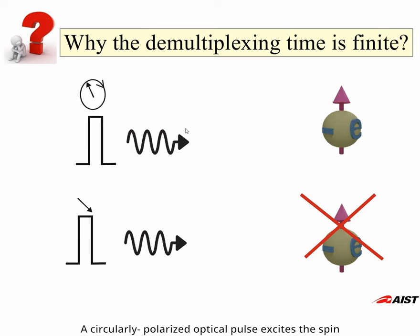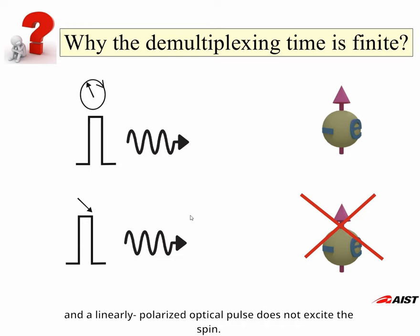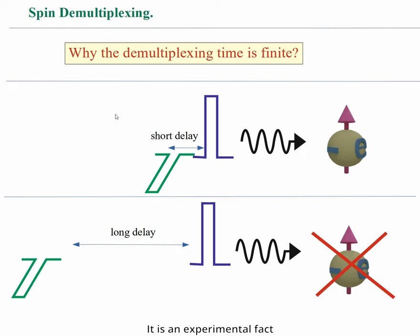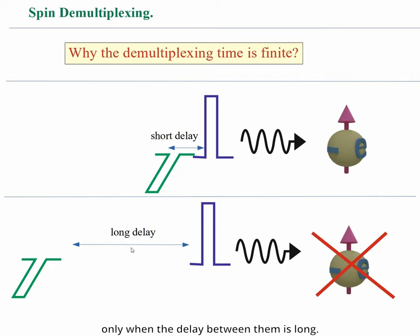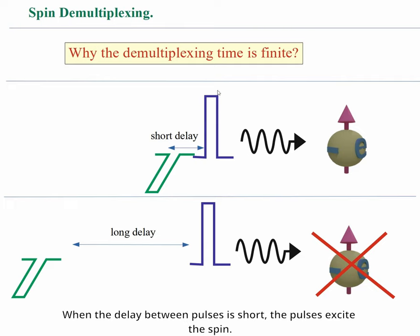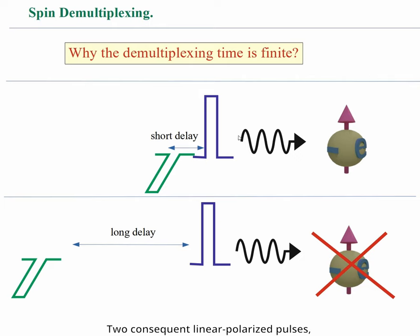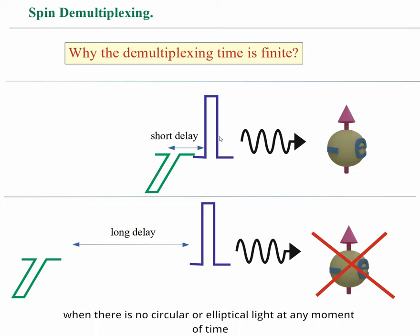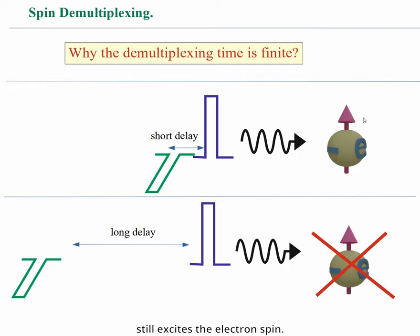A circularly polarized optical pulse excites the spin; a linearly polarized optical pulse does not excite the spin. The output is just yes or no — there is nothing between. However, it is not entirely true. It is an experimental fact that two linearly polarized pulses do not excite spin only when the delay between them is long. When the delay between pulses is short, the pulses do excite the spin. Two consequent linearly polarized pulses, which are not overlapping at any moment in time, with no circular light and therefore no photon carrying a spin, still excite the electron spin.